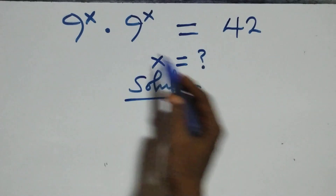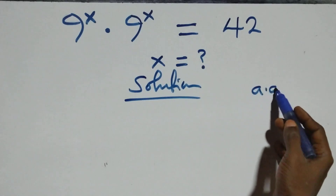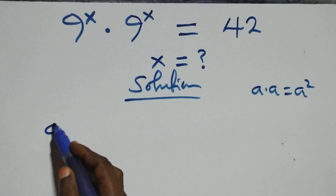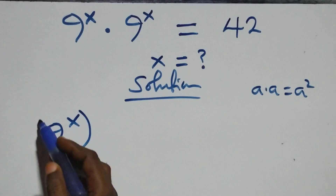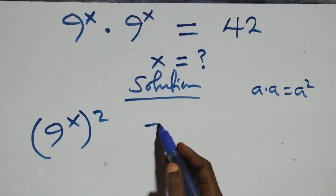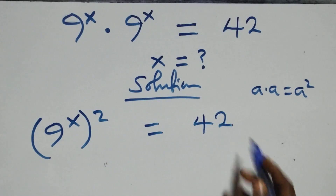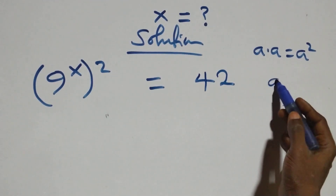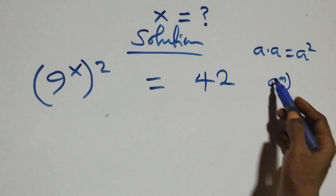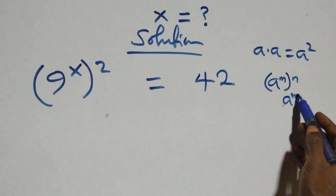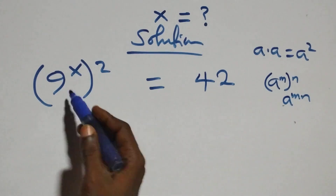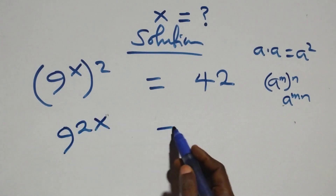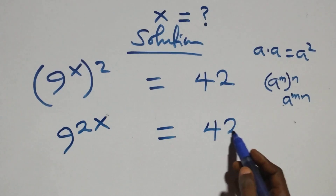From what we have here, this follows when we have a times a, which is the same thing as a squared. With that same thing multiplying here, we have 9 raised to power x, all squared, equals 42. Using the law of indices — a raised to power m, raised to power n, equals a raised to power mn — this power multiplies and we have 9 raised to power 2x equals 42.